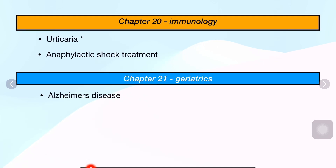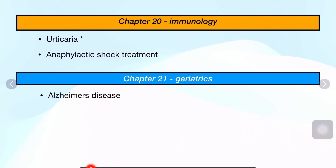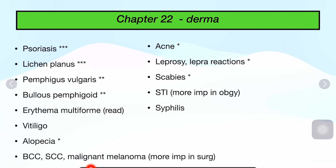Then comes Chapter 20 and 21, Immunology and Geriatrics. Important topics include urticaria as an allergic disease, anaphylactic shock treatment, geriatrics, and enzyme diseases.